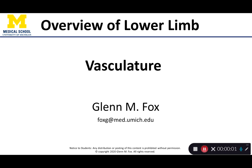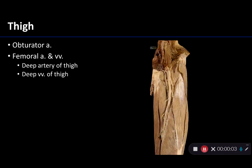Let's talk about the vasculature of the lower limb. We'll begin with the proximal lower limb, the thigh region, which is supplied by two arteries, one of which you can see here.